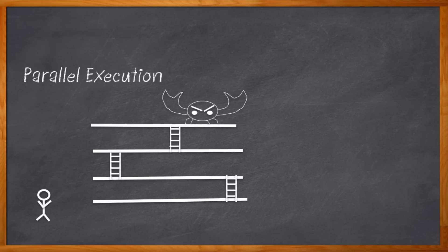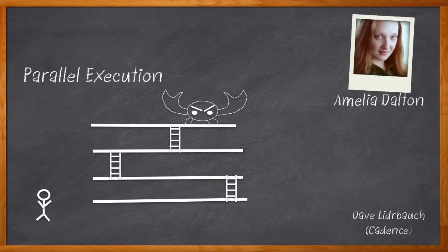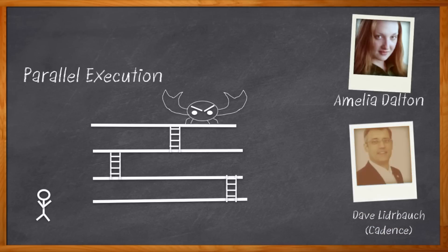Anyway, it turns out it's really hard to make RTL simulation scale. Getting the best performance is a combination of increasing single core speed and very cleverly partitioning the task so that parallel machines can give you the kind of performance boost you'd expect. Hi, I'm Amelia Dalton, host of Chalk Talk. Cadence's third generation Accelium simulator does all that stuff for you, so you don't have to beat any boss level villains to make your simulation go really, really fast.